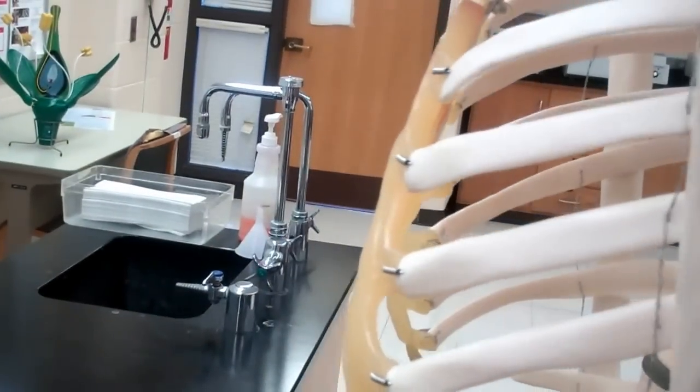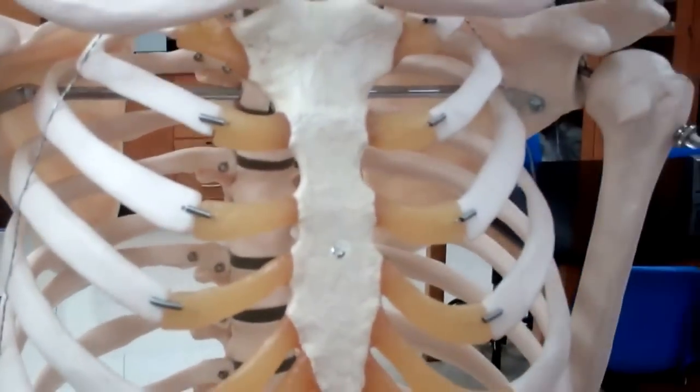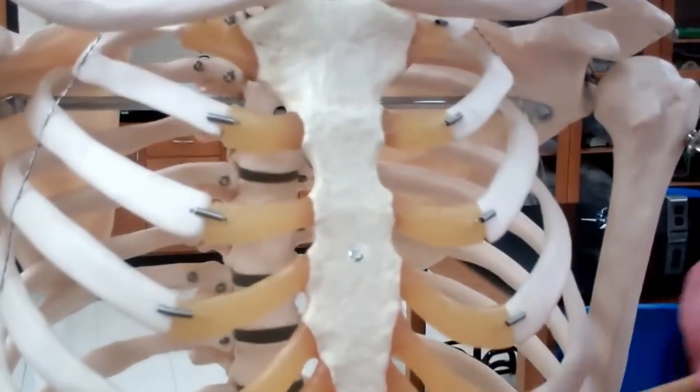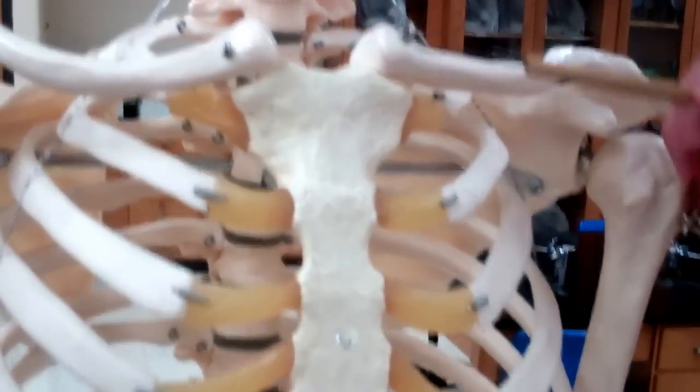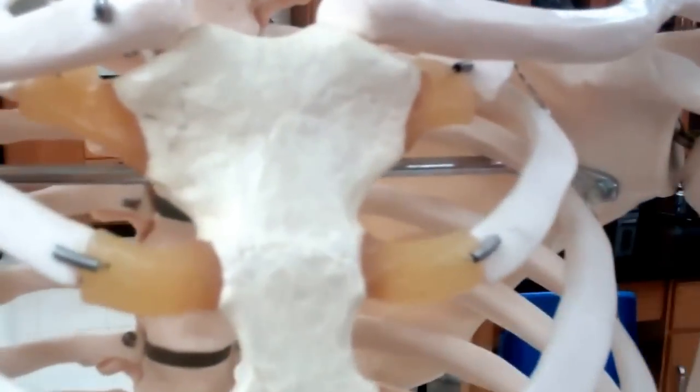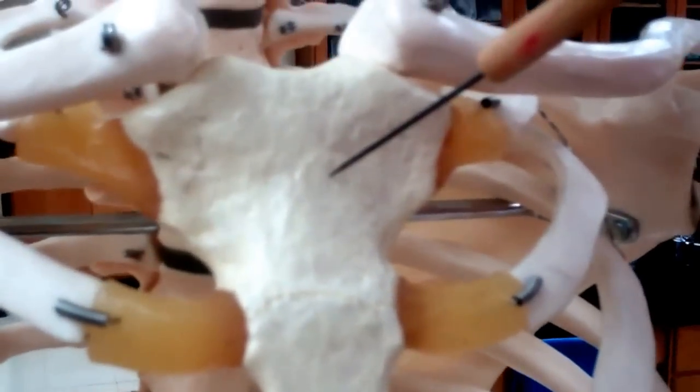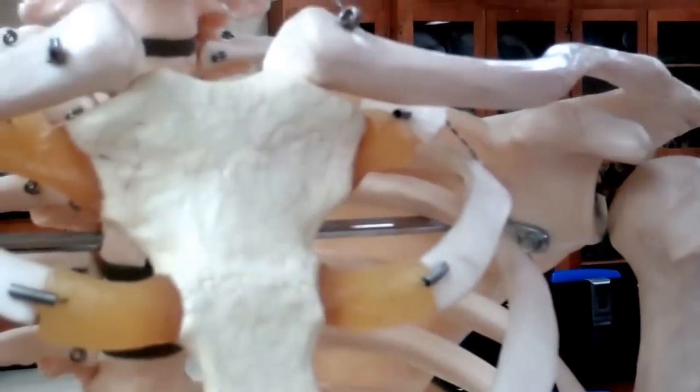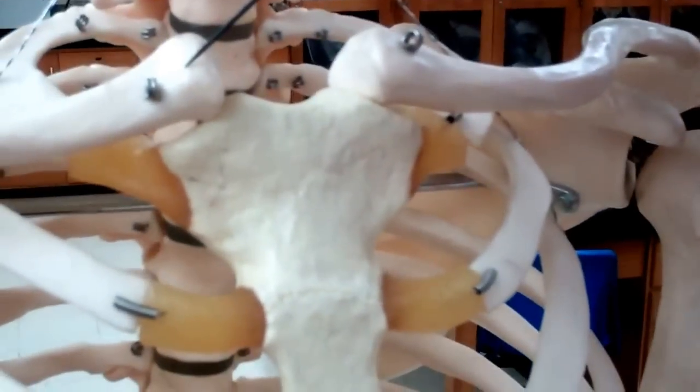If we look at the sternum, we can see that there are three pieces. This kind of looks like a man's tie, don't you think? Which I think ties into the name of the top piece, which is called the manubrium. The manubrium of the sternum is going to be the top part that touches rib number one and the clavicles. You can see both clavicles come together up here.